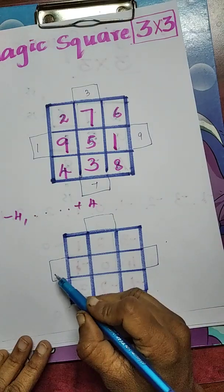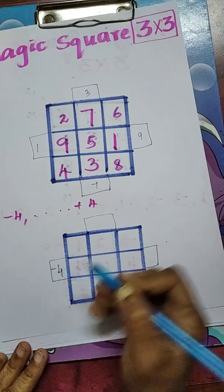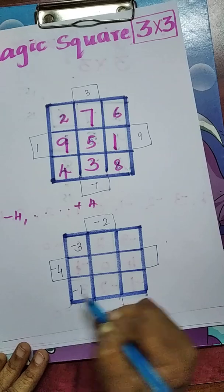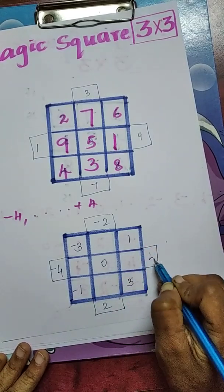First, we can start from minus 4: minus 4, minus 3, minus 2, minus 1, 0, 1, 2, 3, 4.